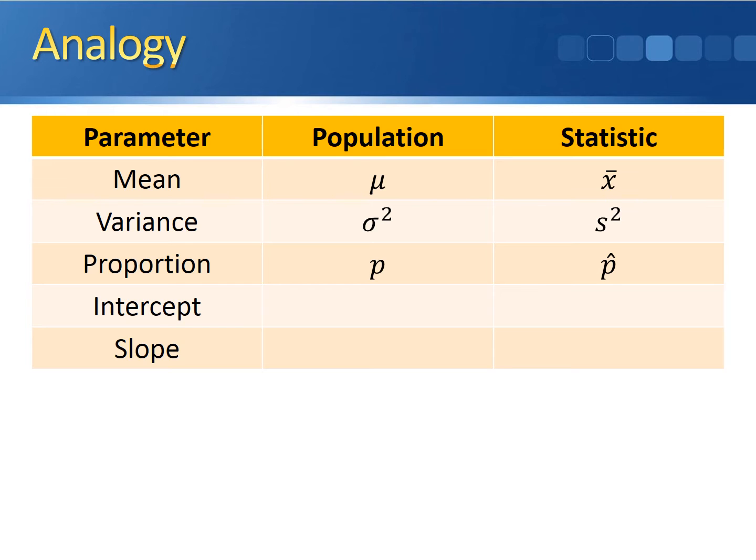B-naught represents our sample statistic for the y-intercept, and we're going to let beta-naught denote the true population parameter for the y-intercept. Similarly, B-1 is the sample slope, so we'll let beta-1 represent the true population parameter for the true relationship, the true slope of the regression line.